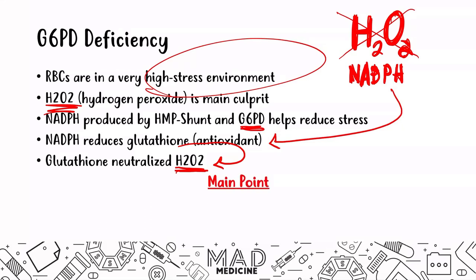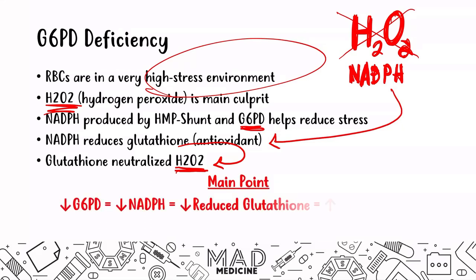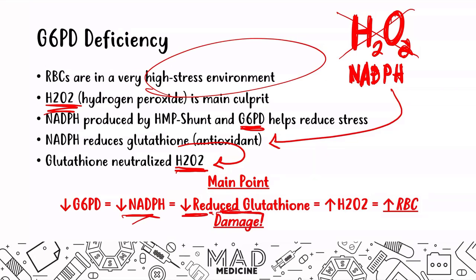If you don't have functioning G6PD, you're not going to be able to produce NADPH, which means you won't be able to reduce glutathione. So you'll have a decrease in reduced glutathione, and that's going to lead to increased activity of hydrogen peroxide and more red blood cell damage.